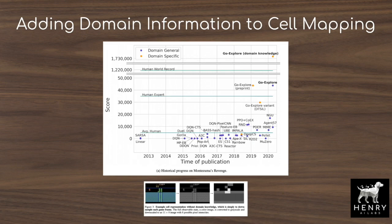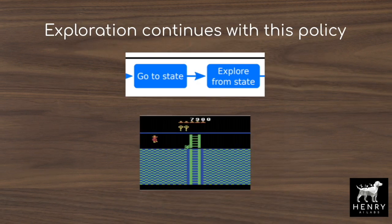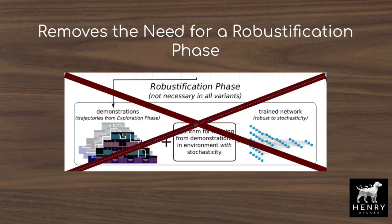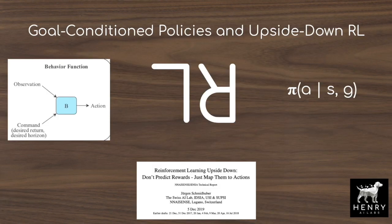First Return, Then Explore introduces policy-based Go Explore. Instead of returning to the most promising state by just resetting the simulator state, the agent learns to return to that state by conditioning the policy on the goal of returning to that state as well as the current state in the policy mapping from state to action. This handles stochastic environment transitions, removes the need for a robustification phase, and provides a more informed policy to continue exploration from the frontier of explored states.